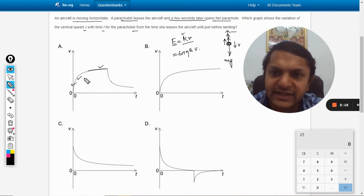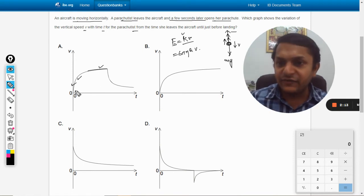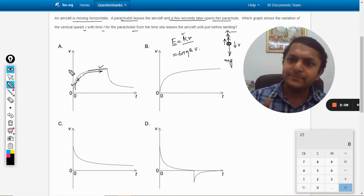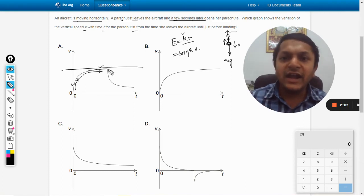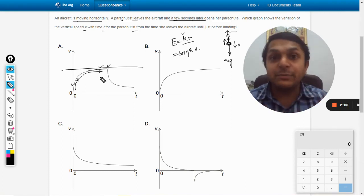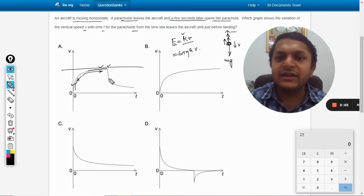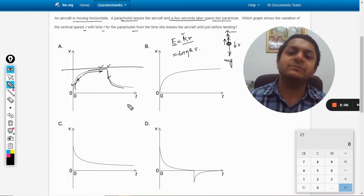This is correct in this graph. First the velocity is increasing, then it becomes constant like this. Afterwards, when she opens the parachute, immediately the velocity drops down.